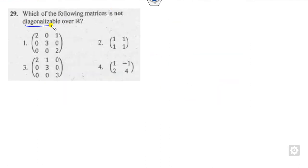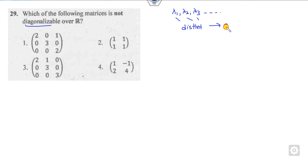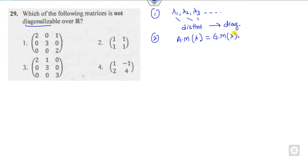Which of the following matrices is diagonalizable? We know that if any matrix has eigenvalues λ1, λ2, λ3 and all eigenvalues are distinct, then it is diagonalizable. Condition 2: when the algebraic multiplicity of each eigenvalue equals its geometric multiplicity, then we can say it is diagonalizable.